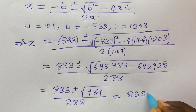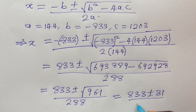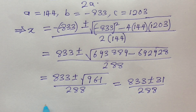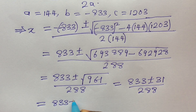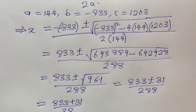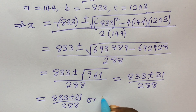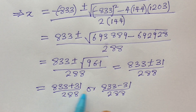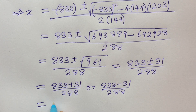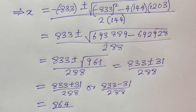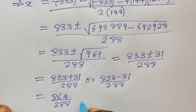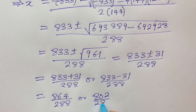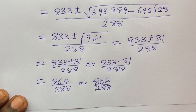We can rewrite this as 833 plus or minus 31, all over 288. Splitting the plus-or-minus sign: we get either 833 plus 31 over 288, or 833 minus 31 over 288. Adding the first gives 864 over 288. Subtracting the second gives 802 over 288.